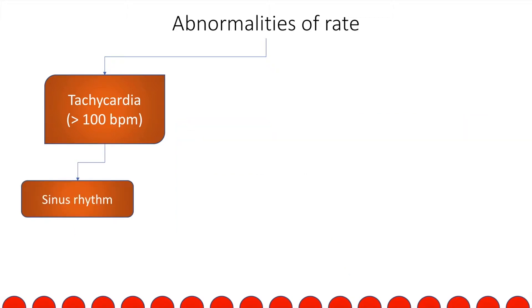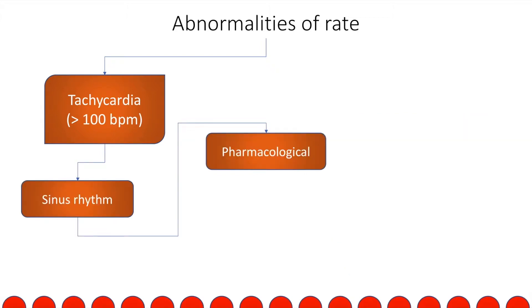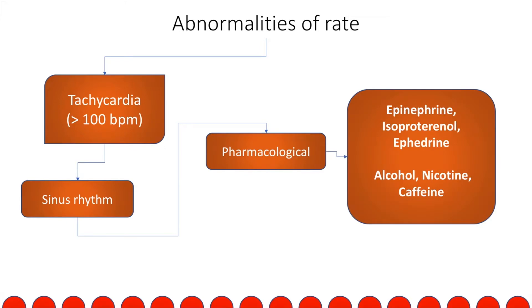Tachycardia which is in sinus rhythm and is due to drugs can be because of epinephrine, isoproterenol, ephedrine, alcohol, nicotine, and caffeine.